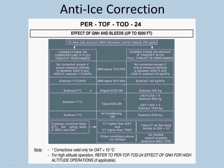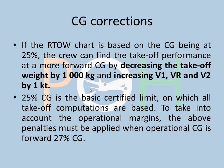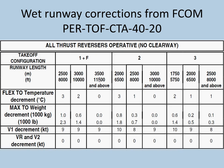CG corrections: the chart is designed for 25% CG. From FCOM performance takeoff conditions, if CG is more forward — more than 27% — we decrease takeoff weight by 1000 kg and increase V1, VR, V2 by 1 knot. In this question, CG is assumed at 25%, so no CG corrections are applied.